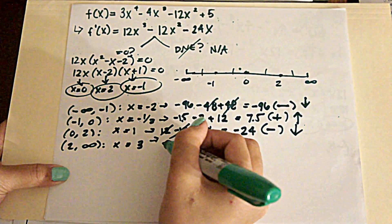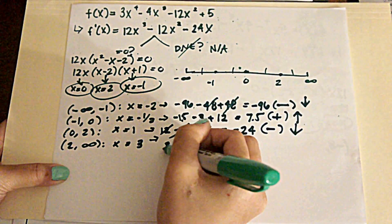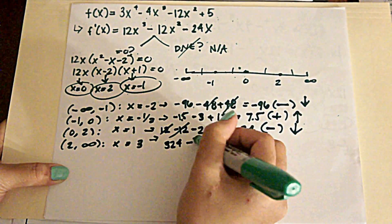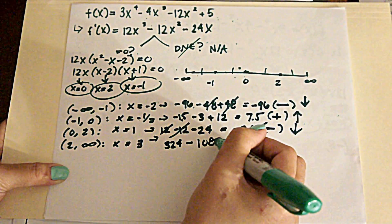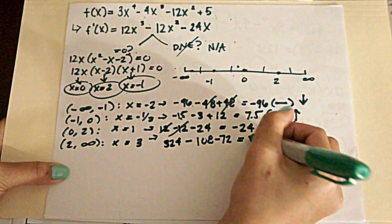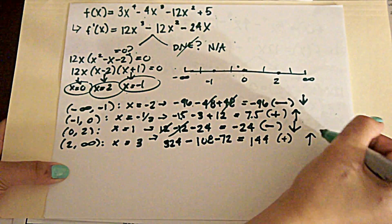And lastly we get here when we plug this in. 324 minus 108 minus 72. And that leaves us with positive 144. And we are increasing.